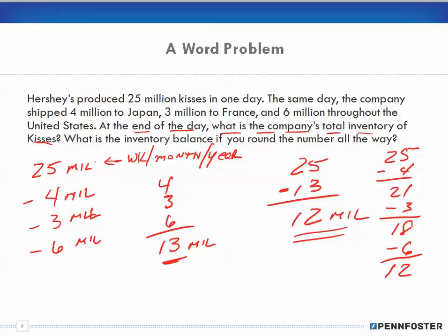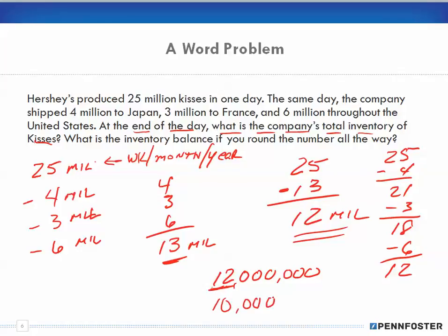Now it asks: what is the inventory balance if you round the number all the way? The answer is 12 million. Rounding all the way means I start with 12 million, use the 2 to round the tens-of-millions digit. Since 2 is less than 5, I round down, giving me 10 million. That answers that question.